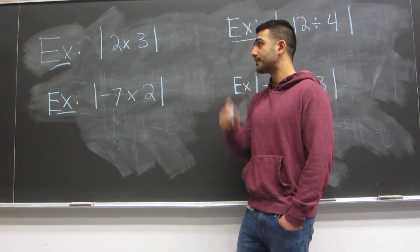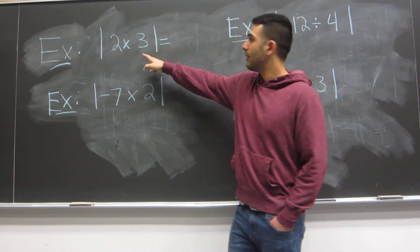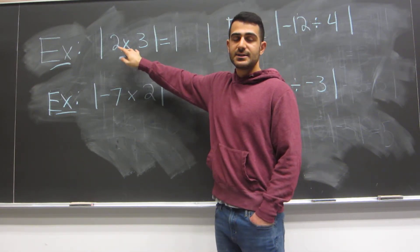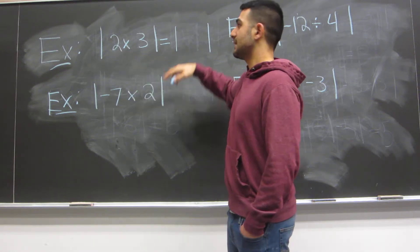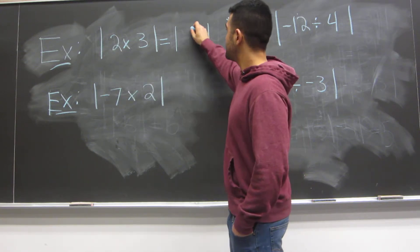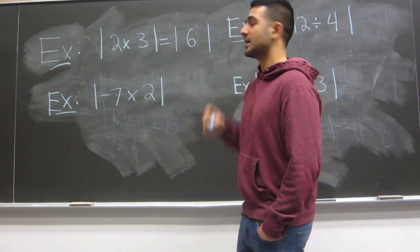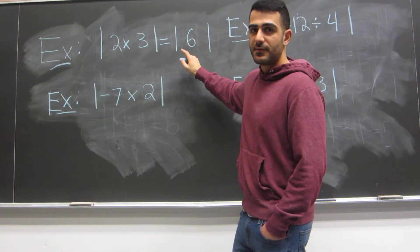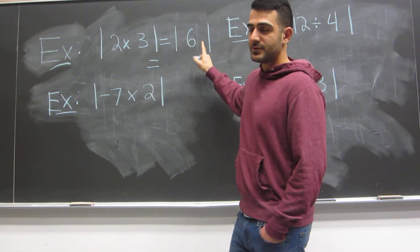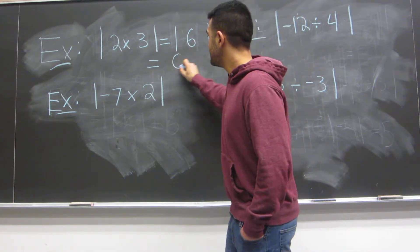When you can't simplify any further, evaluate. Let's look at this first example. We carry on with the absolute value and simplify as much as we can. We know what 2 times 3 is, so the absolute value of 2 times 3 is the absolute value of 6. We can't simplify further, so we evaluate: the absolute value of 6 is just 6.